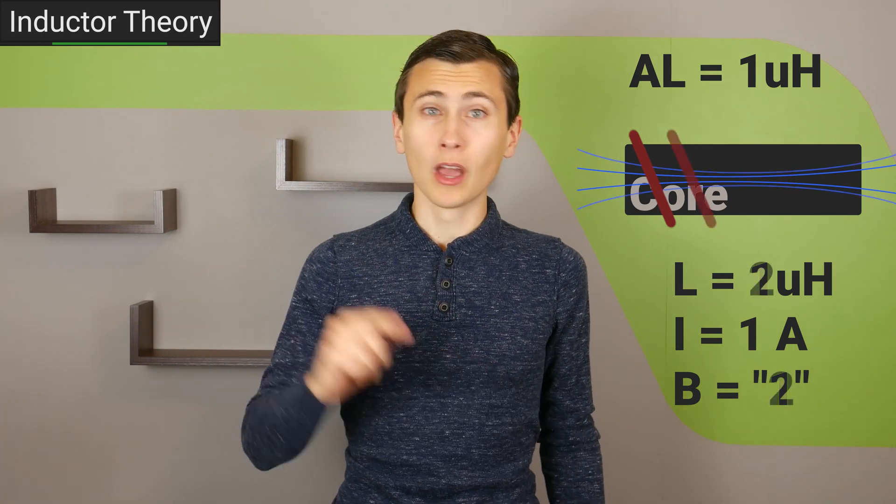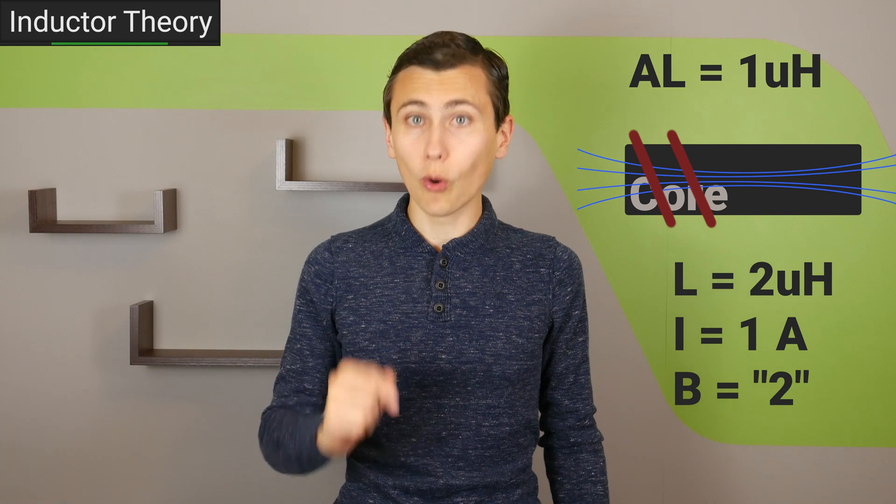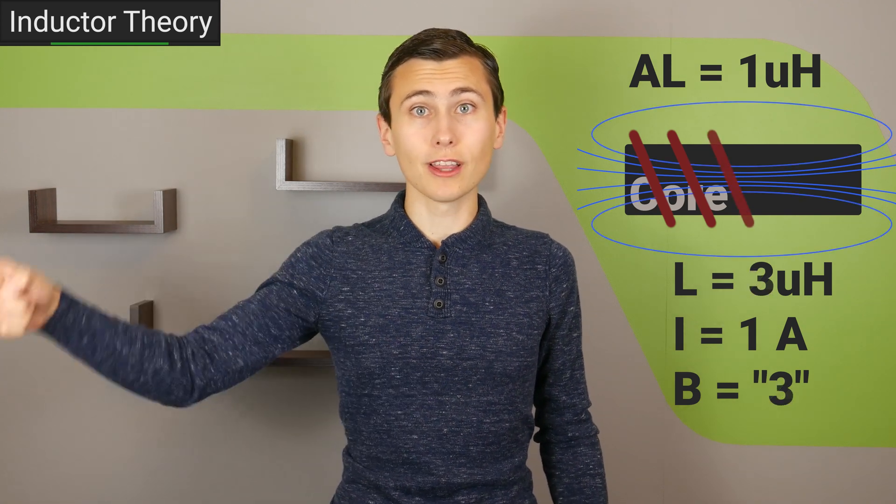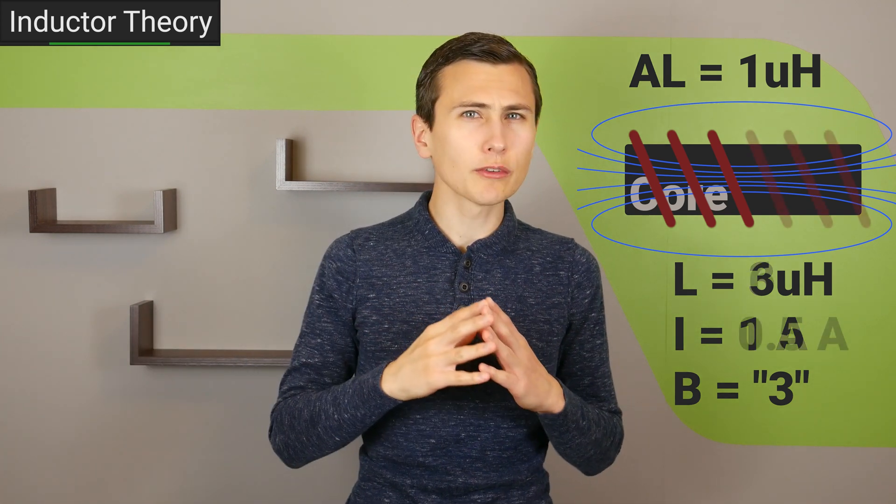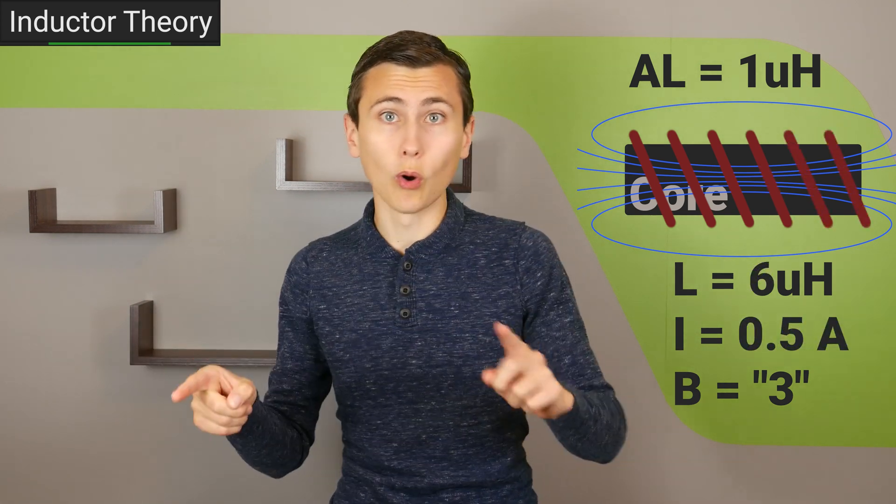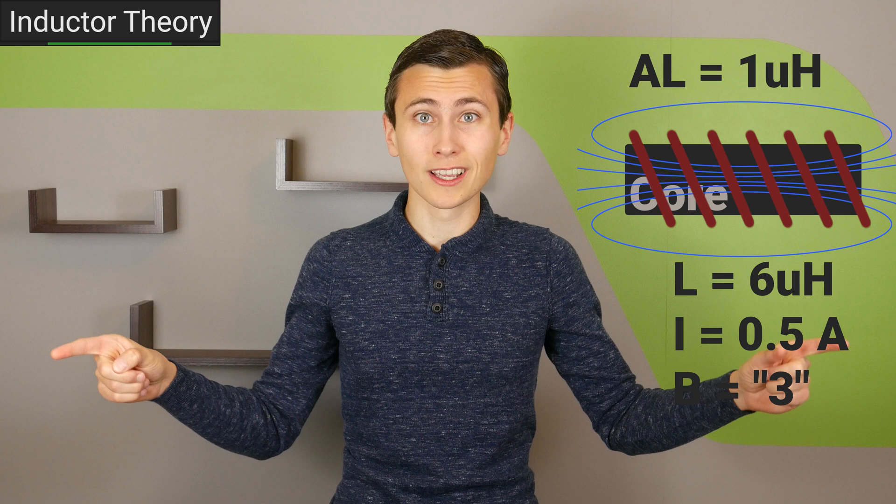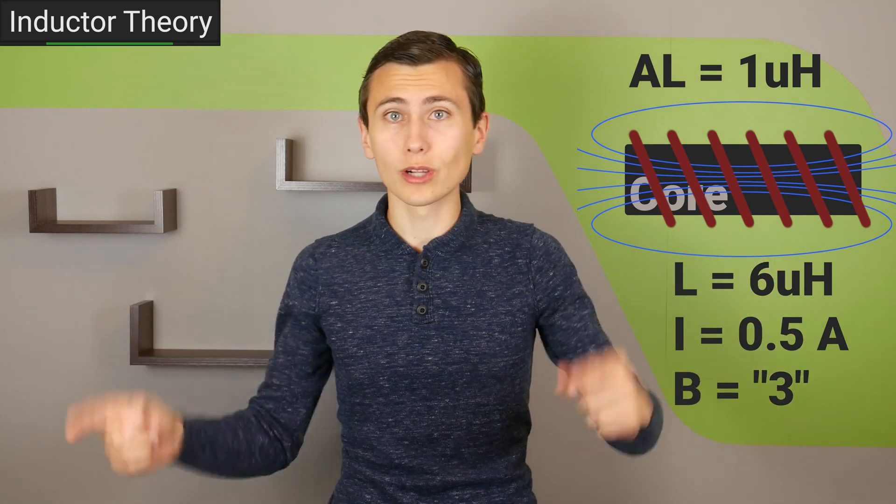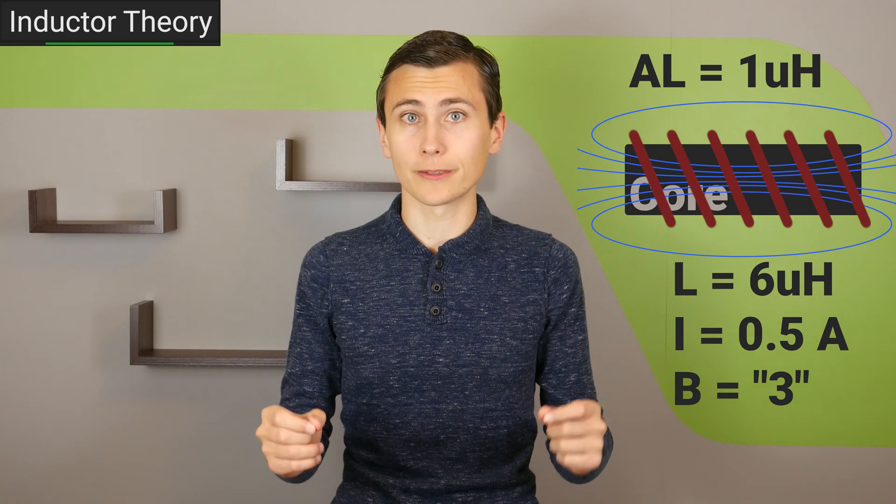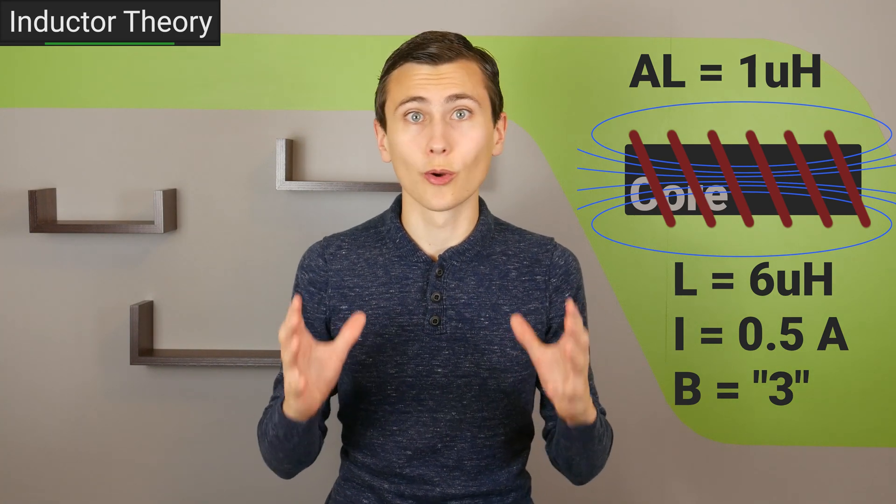The more turns that we wrap around the core, the more magnetic flux that will induce at a particular current level. This means that if we need a large inductance, but we also need to withstand a lot of current, we'll need to consider how many turns of wire are required and how close that may push us to saturation.